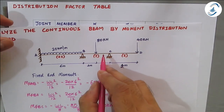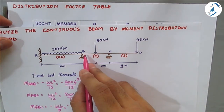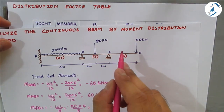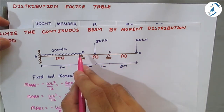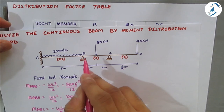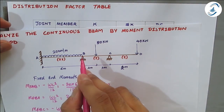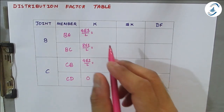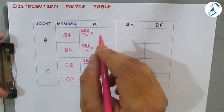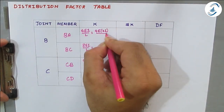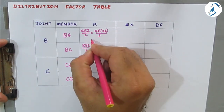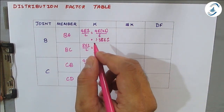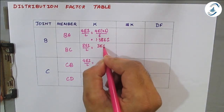Many students get confused and take 4EI/L for BC, treating CD as a span, but for an overhang we do not consider it a span. So BC uses 3EI/L and CB uses 4EI/L. The I value for AB is 2, so for BA: 4E(2I)/6 = 1.33EI. For BC with I = 1: 3EI/4 = 0.75EI.